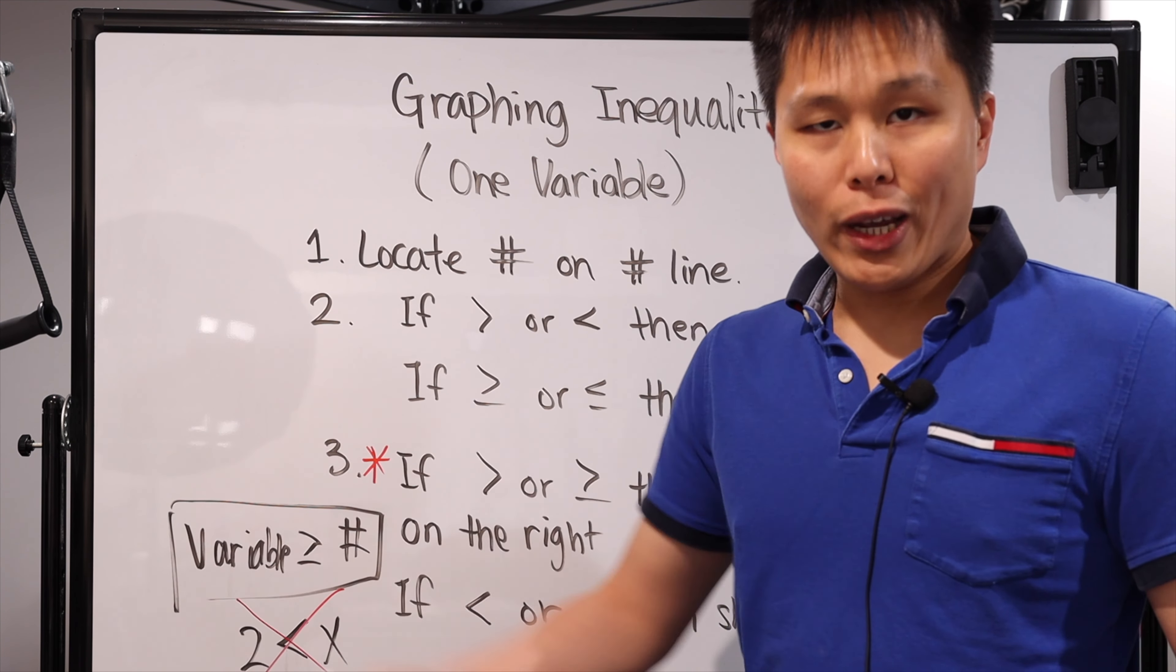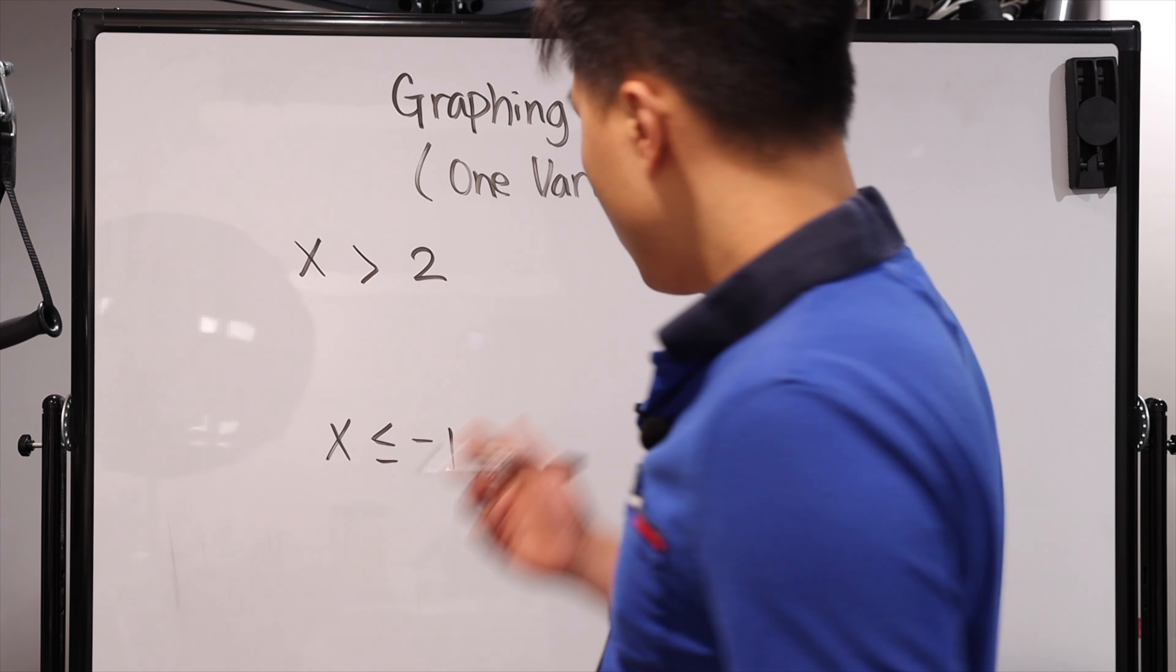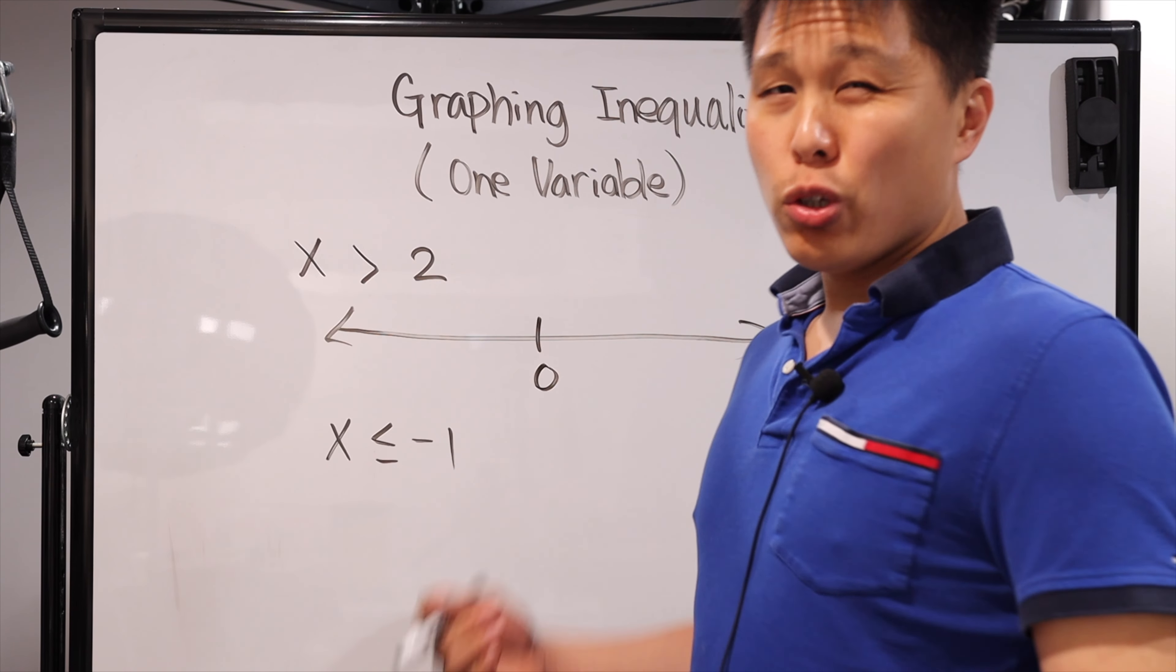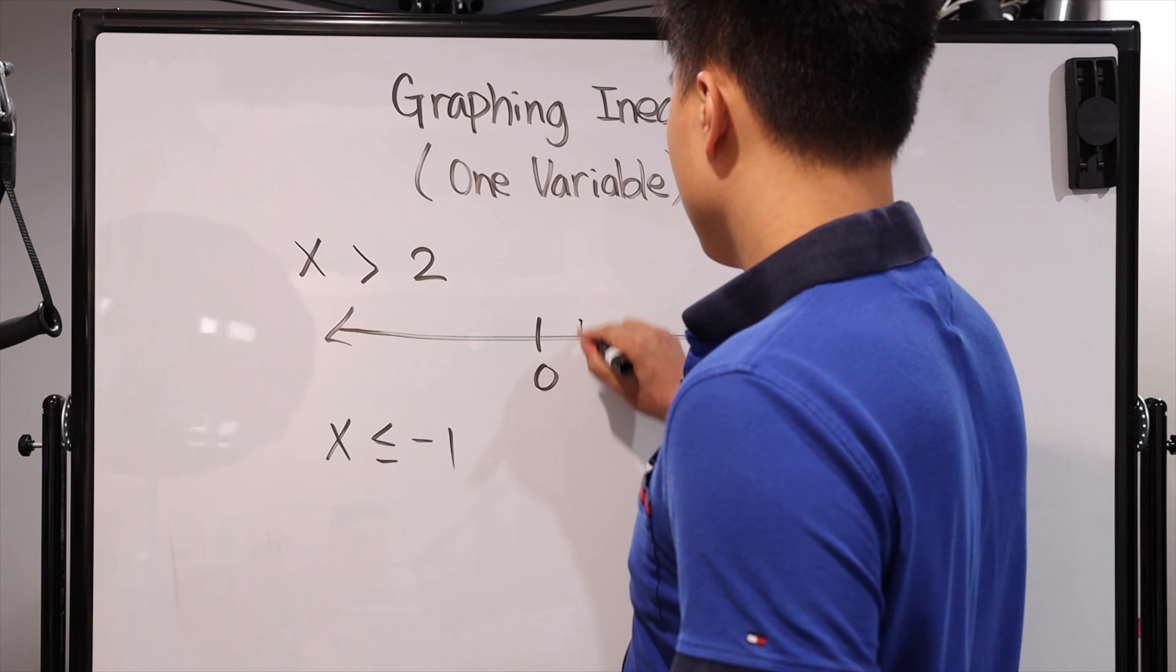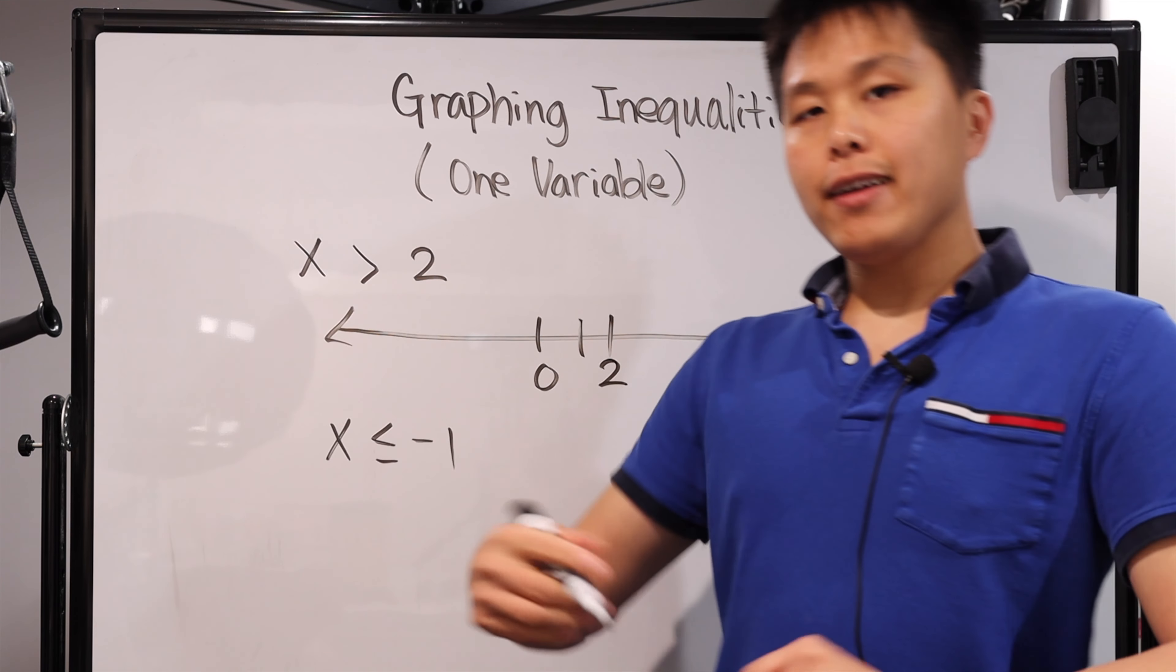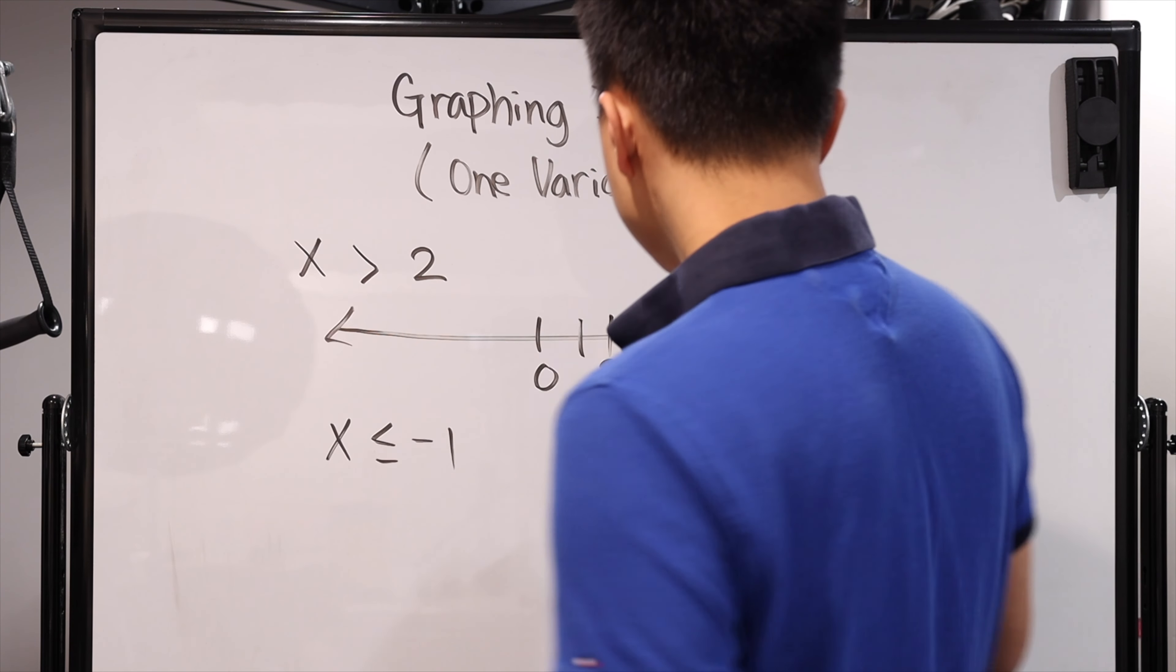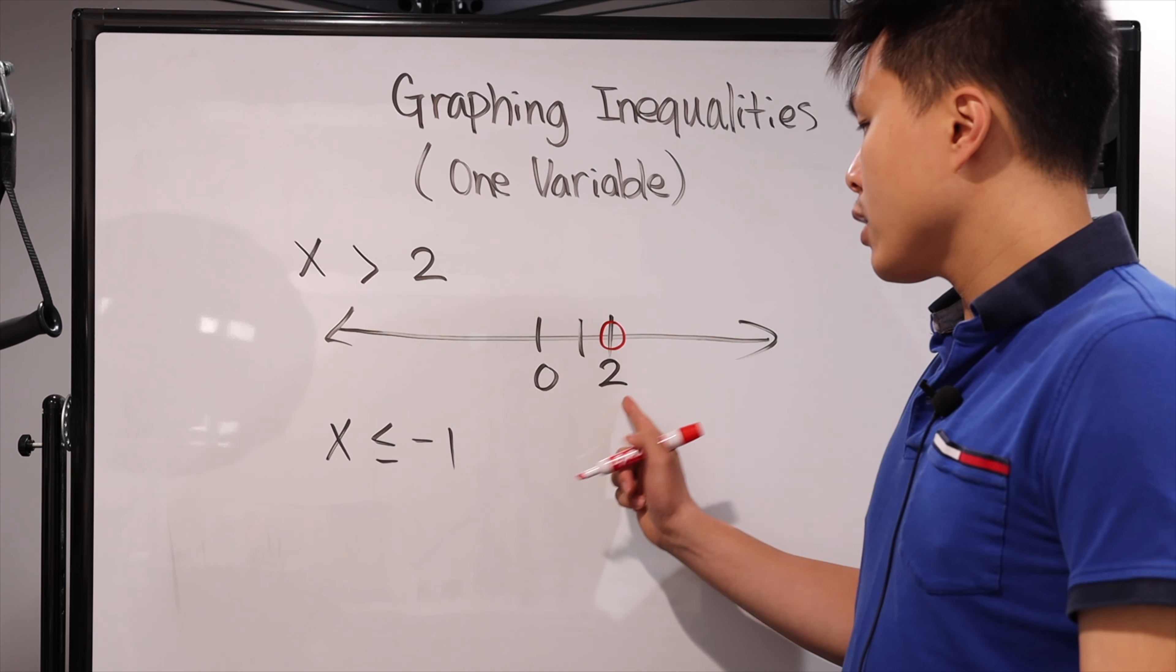So let's look at some examples on how to actually graph it. All right, so let's look at these examples. x is greater than 2. So basically, once again, you have your number line. And when I draw a number line, I usually love just putting a zero so I know which side is negative and which side is positive. You really don't have to if you don't want to. I just think it's more clear this way. You look at the number, you find it on the number line. So it's gonna be one, two next to on the right of zero. So two is right there.